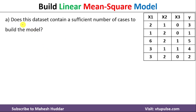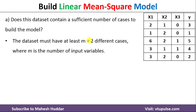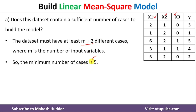The first question is: does this dataset contain a sufficient number of cases to build the model? To determine this, we should have at least m plus 2 different cases or examples, where m is the number of input variables. In this case, x1, x2, and x3 are the three input variables, so 3 plus 2 equals 5. We should have a minimum of five instances or cases.